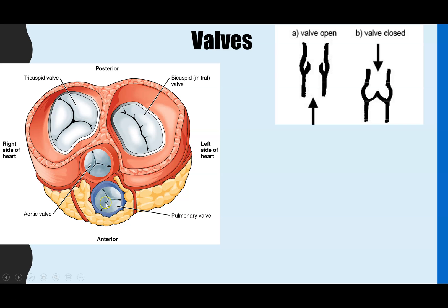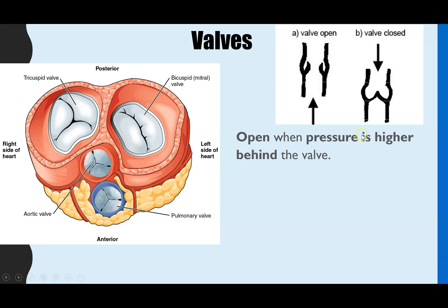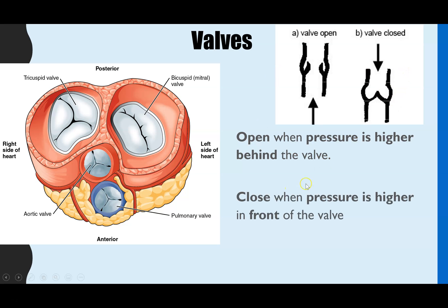The semilunar valves are found within the pulmonary artery and the aorta. The function of valves is to make sure blood flows in one direction. Valves will only open if there is higher pressure from behind and will close when there's higher pressure in front — think of a hinged door: push it from behind and the door opens; push it from the front and the door shuts. This means blood only flows in one direction (unidirectional), preventing backflow.